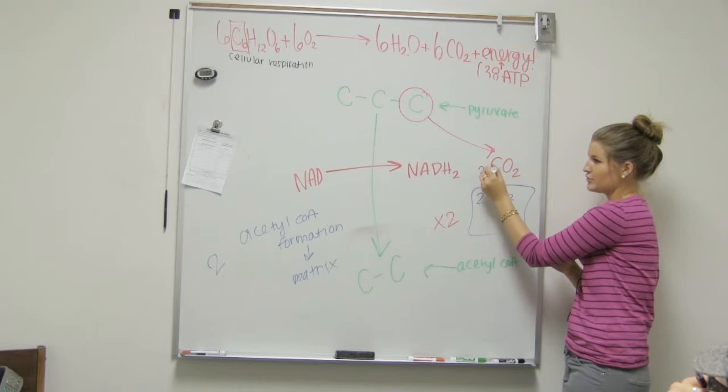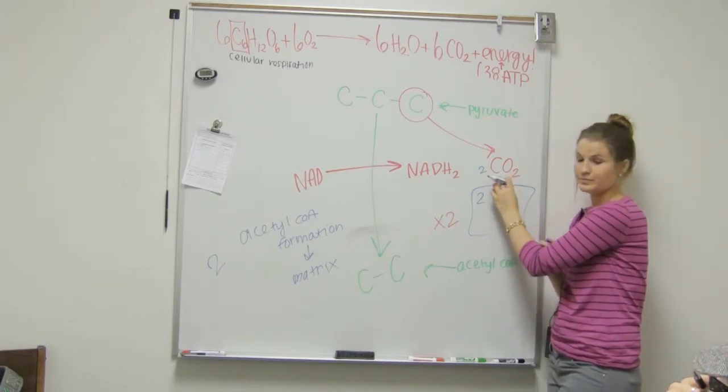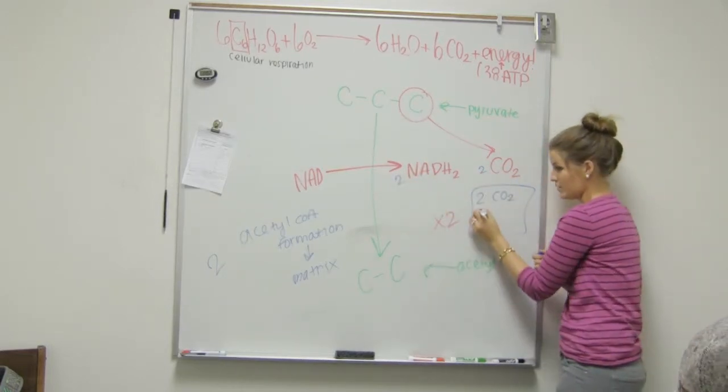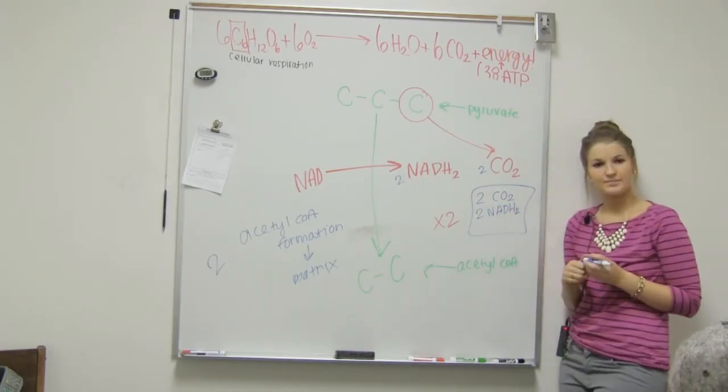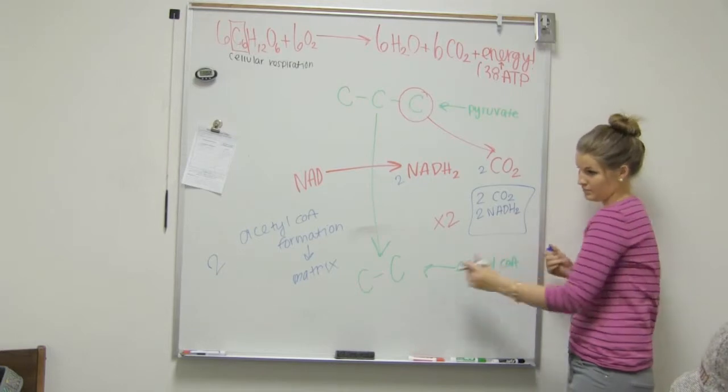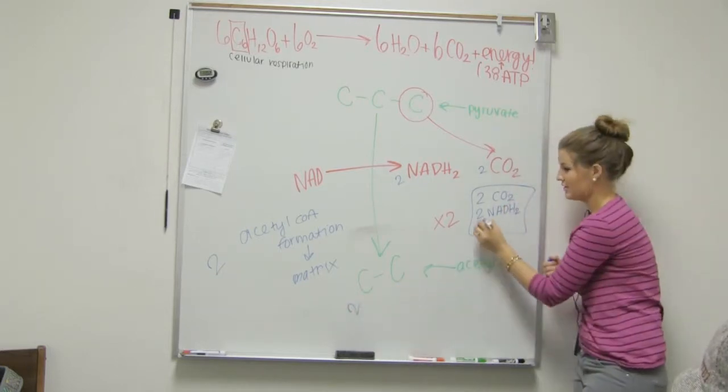So what else did we make? We made two? Two. And two NADH. Right? Two. Oh, yeah, because it's two both sides. Awesome. And what else? Acetyl-CoA. How many? Two. Two acetyl-CoA.